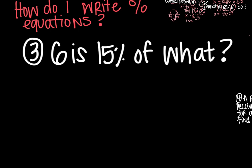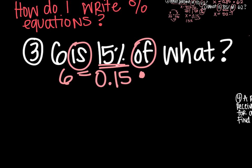Question number 3. 6 is 15% of what? Again, pick out the important words. 6 is means equals. Here we have a percent, so we want to back it up, back it up. We get 0.15. Of means multiplying. And then what? Well, we don't know what that is, so that's our variable. So now I have my equation.